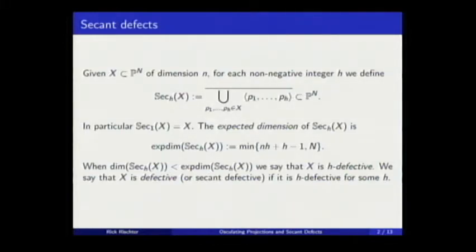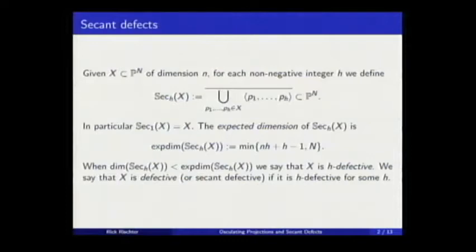If this secant is not expected to fill up the entire space. For instance, if you have a surface in P³, the secant of lines is going to fill up the entire space, a non-degenerate surface. So to count this expected dimension, you have to take this into account.